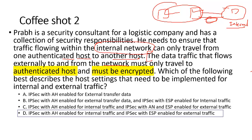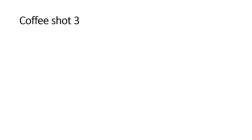Option D: IPSec with AH enabled for internal traffic and IPSec with ESP enabled for external traffic. I'll go with D because within the internal system I need authentication, but when sending data out I need authentication with confidentiality, which is offered by ESP. In this scenario, when sending data out, I want authenticity and encapsulation via ESP. That's why the answer is D.